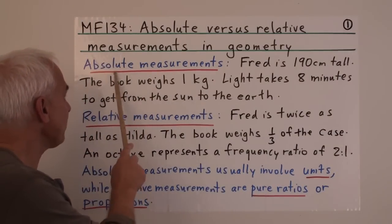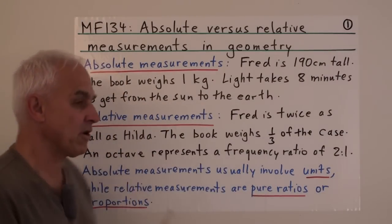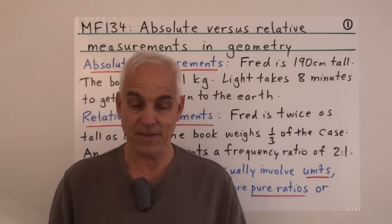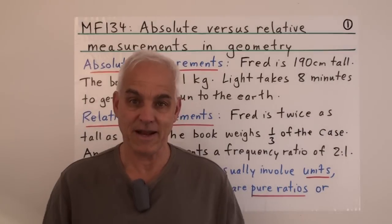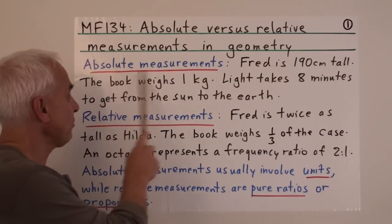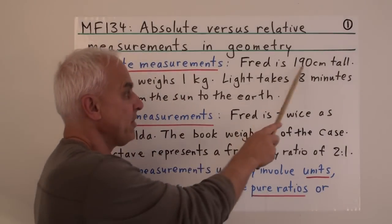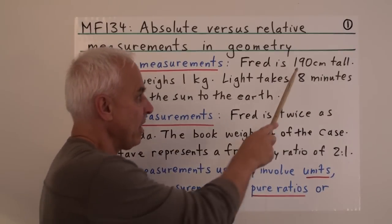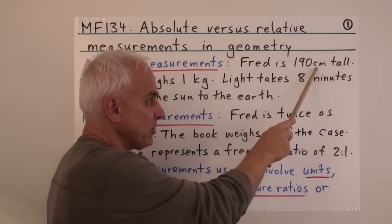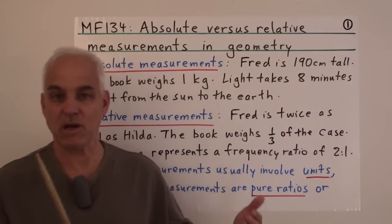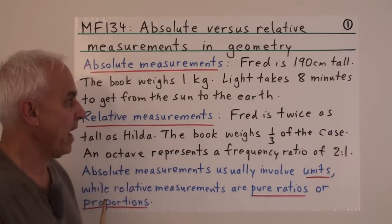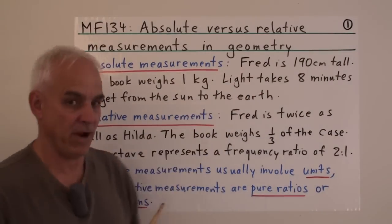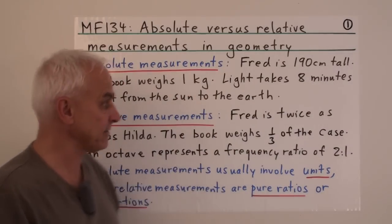The notions of absolute measurements and relative measurements are in fact very familiar to us from everyday life. An absolute measurement is something like 'Fred is 190 cm tall.' It involves a particular number and a certain amount of units measuring some particular quantity, and there's only one object involved — in this case, Fred.